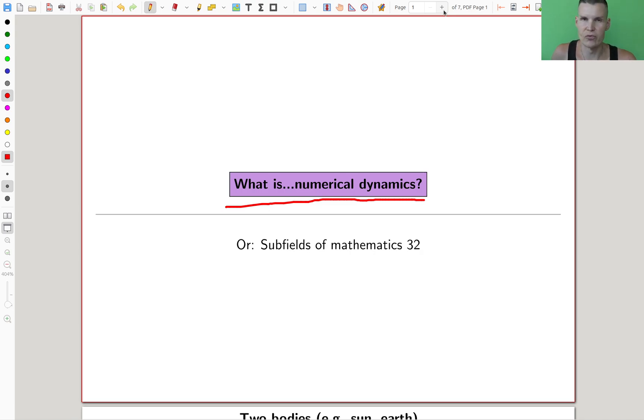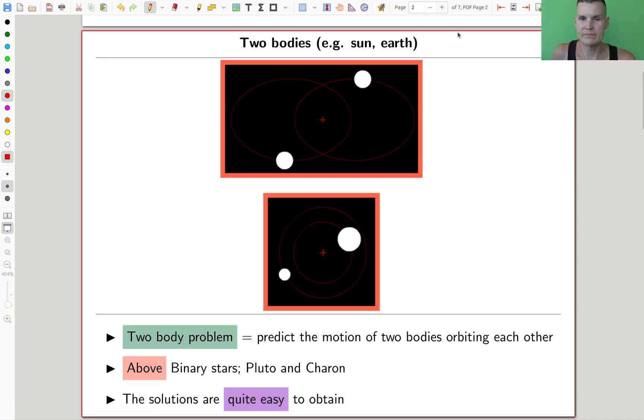The two-body problem is, depending on where you went to school, something you might have seen already in school, literally solved in school. I could think of the sun and the earth, or two equally mass stars, or something like Pluto and Charon.